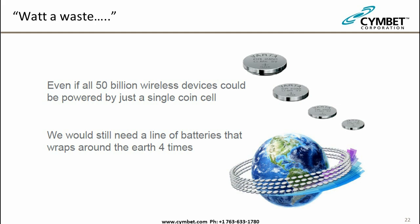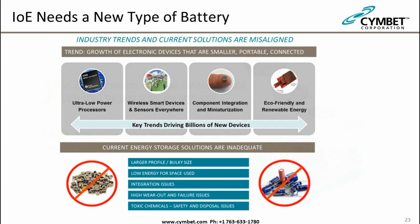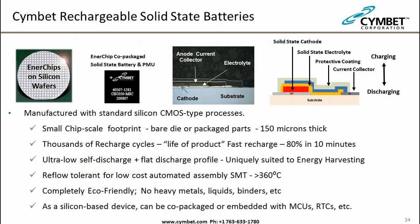Looking at new battery technology: coin cells and super caps are larger and bulky, can't be integrated into small packages, wear out, and contain toxic chemicals. A better solution is the Simbit Enerchip — rechargeable batteries built on silicon wafers using semiconductor techniques. Customers can use bare die directly or packaged in plastic parts. They come on tape and reel, support surface mount assembly and reflow solder, and are treated like any other chip on the board. They're designed to last the life of the product, being rechargeable thousands of times.